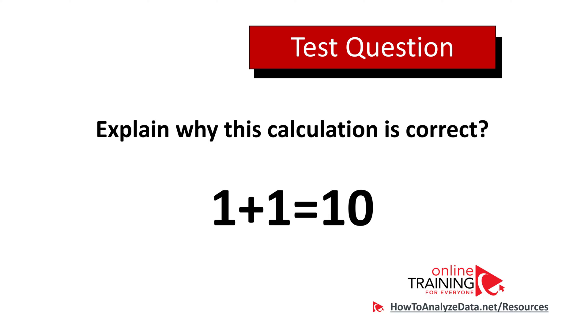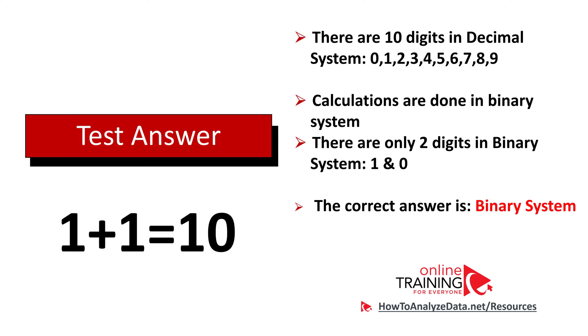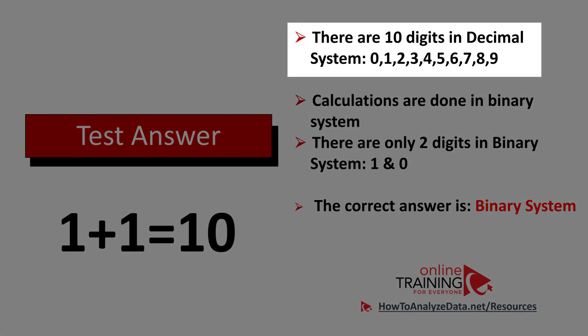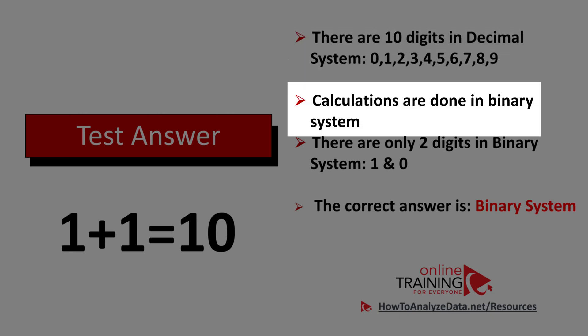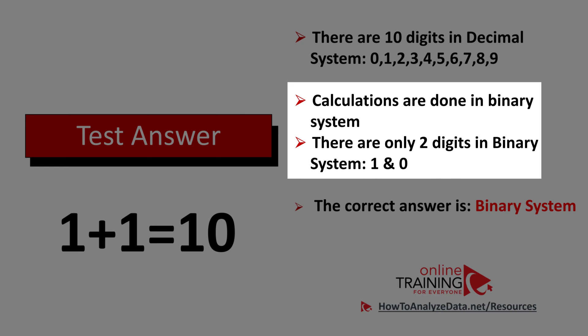Typically when we do calculations we use 10 digits in the decimal system: 0, 1, 2, 3, 4, 5, 6, 7, 8, and 9. But here calculations are done in the binary system, and there are only two digits — 1 and 0. So when you add 1 plus 1 in the binary system, what looks like 10 is actually 2. The correct answer is that this calculation is possible because of the binary system.